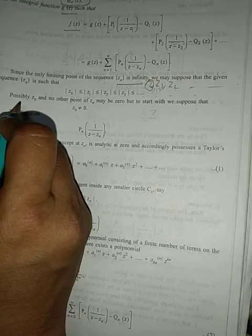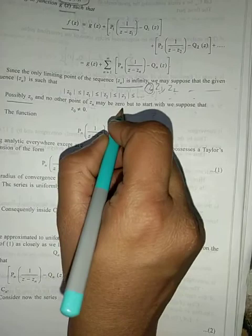Now possibly z₀ and no other point of z₀ may be 0 but we suppose that z₀ is not equal to 0.